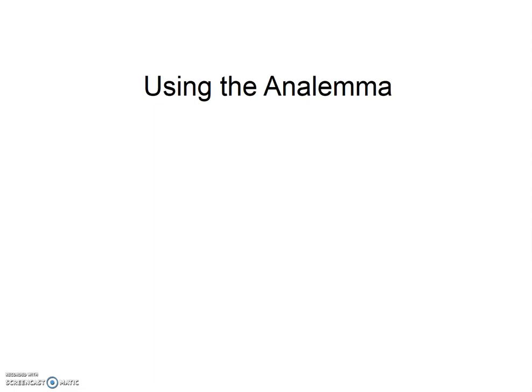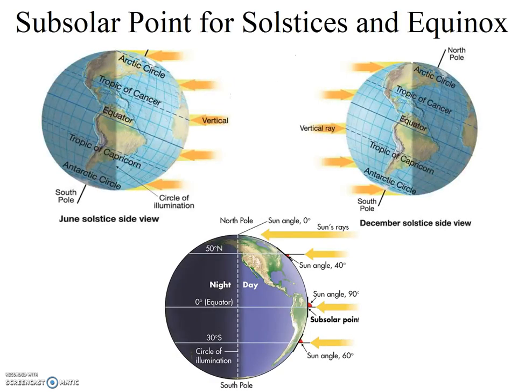This video clip is on using the analemma. The analemma is a diagram posted on our class website which you will need to use for this week's homework assignment. You now know that the subsolar point is the latitude that gets the direct 90-degree vertical rays of the noon Sun on a particular day of the year. You have memorized the subsolar point for four days of the year: the two solstices and the two equinoxes.